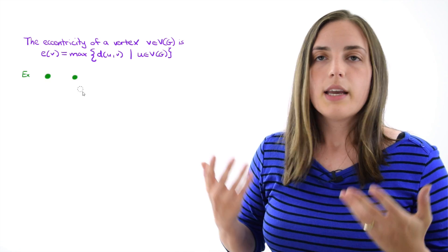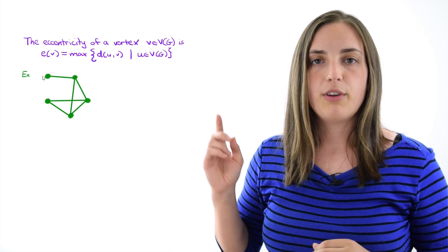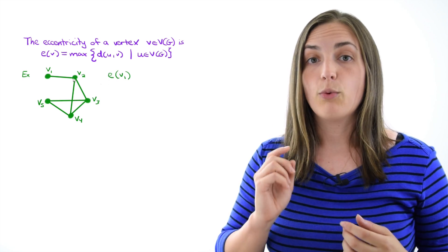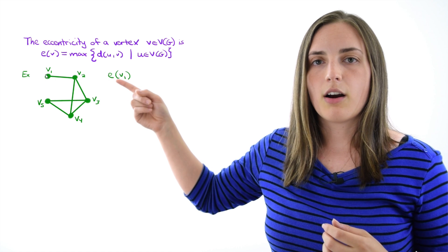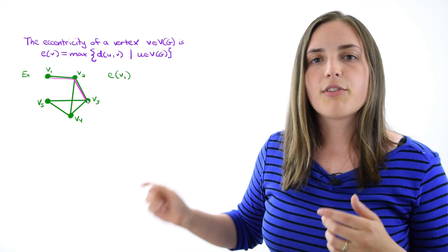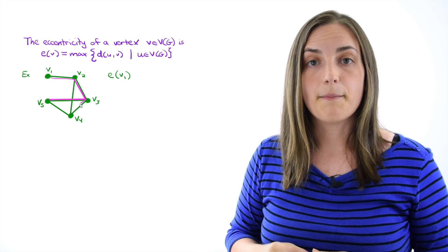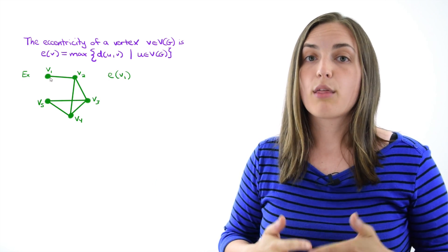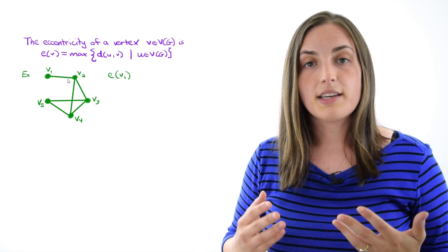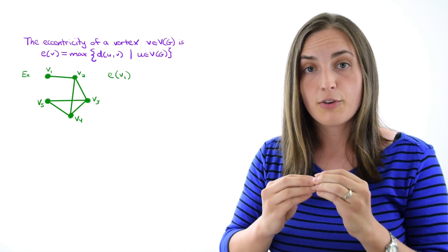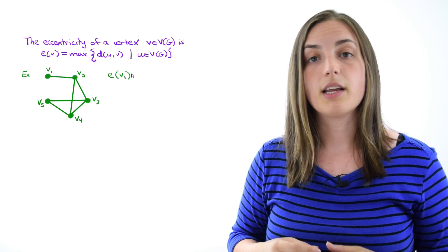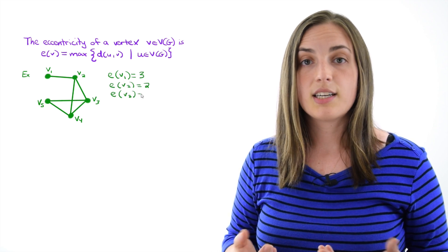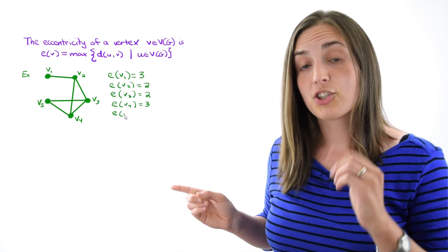Let's take a look at an example. Here we have five vertices labeled v1, v2, v3, v4, and v5. Let's figure out the eccentricity of v1. V1 is over on the left, so we take a look at all the other vertices and find the shortest paths to them. We can see that we can get from v1 to any other vertex with a path of length at most three. So the maximum distance from v1 to any other vertex is three, meaning the eccentricity of v1 is three. Now let's figure out the eccentricities of the rest — make sure that you agree.